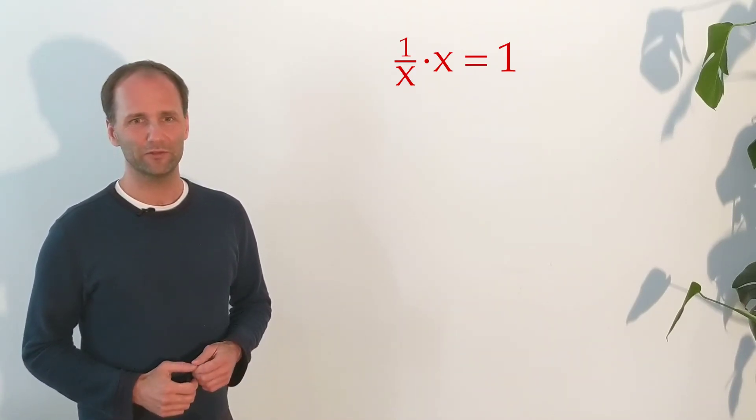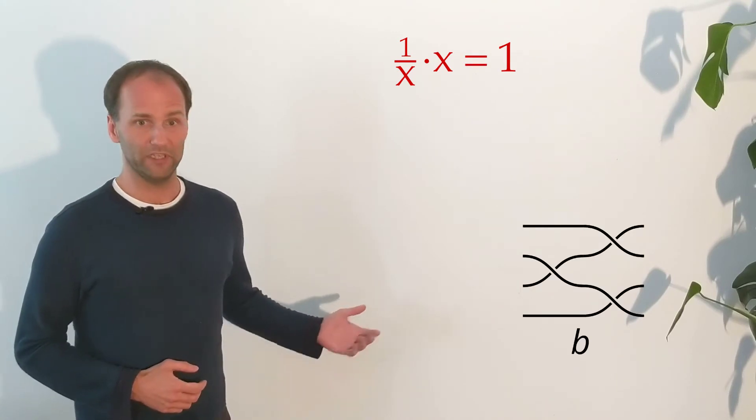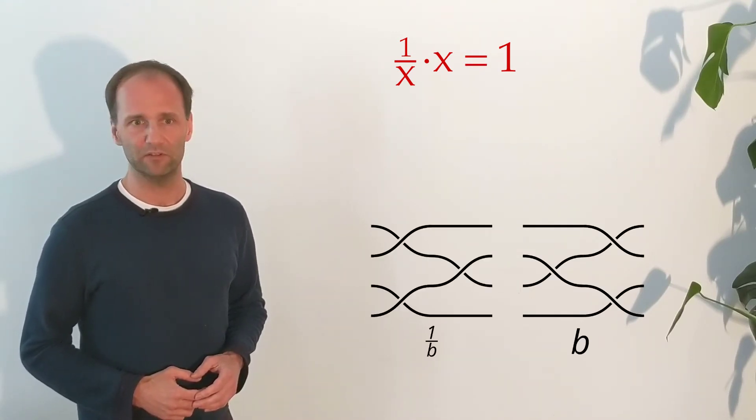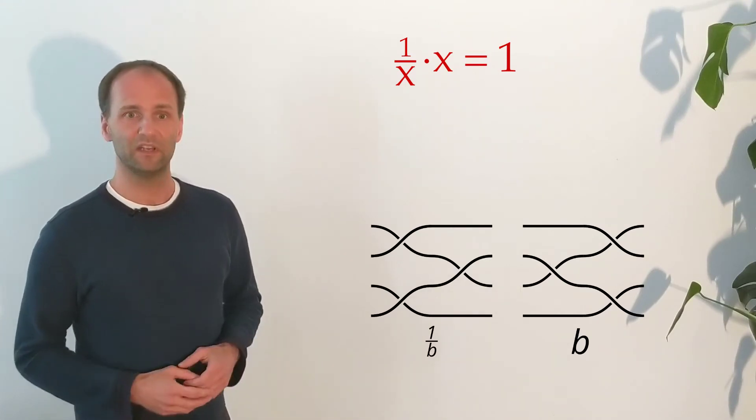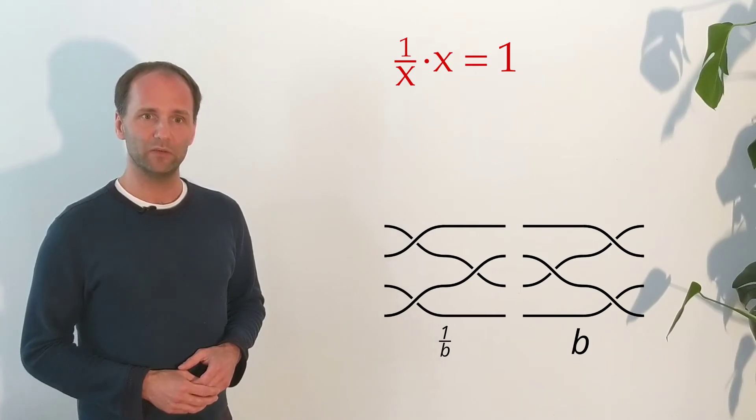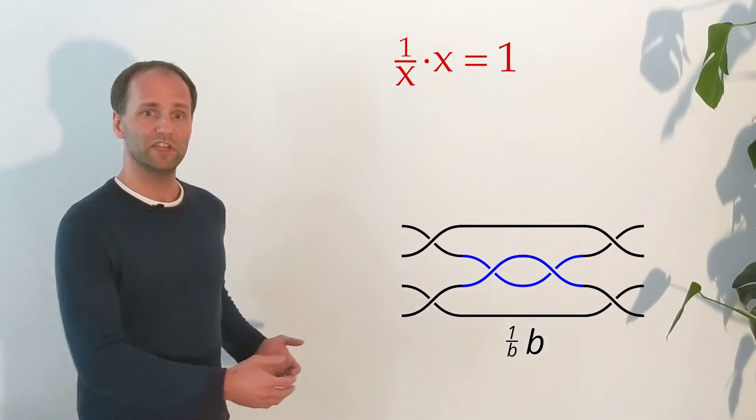Similarly, if you look for example at this braid B, there is another braid that we will call the inverse of B or simply 1 over B because it has the property that multiplying B and 1 over B returns the identity braid.